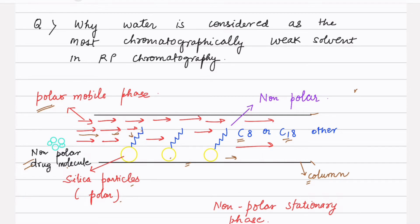In the case of a polar drug molecule, what happens is that the polar drug molecule will elute very early with the mobile phase, which is also polar in nature, and it will most probably elute in the void volume.